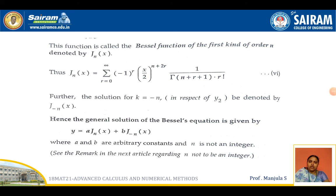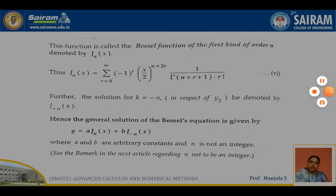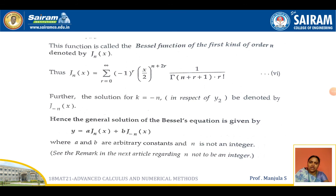Similarly, finding y2 by replacing k = −n, we get y2 = J_{−n}(x). So the general solution of the Bessel equation can be written as y = a·Jn(x) + b·J_{−n}(x), where n is not an integer and a, b are constants. This is our required general solution of the Bessel equation.